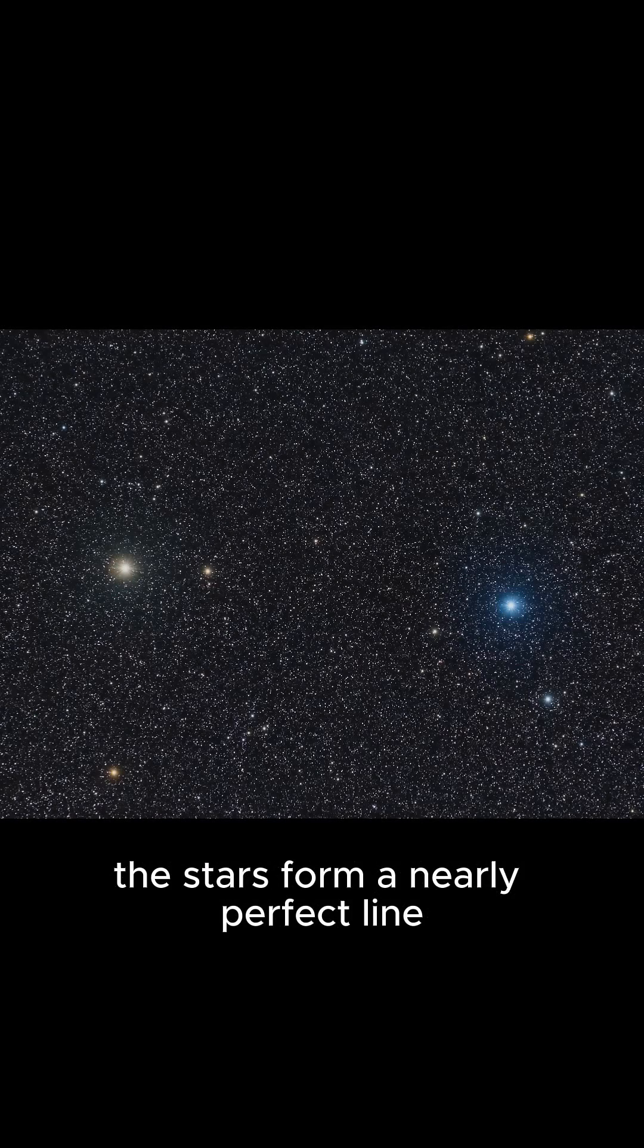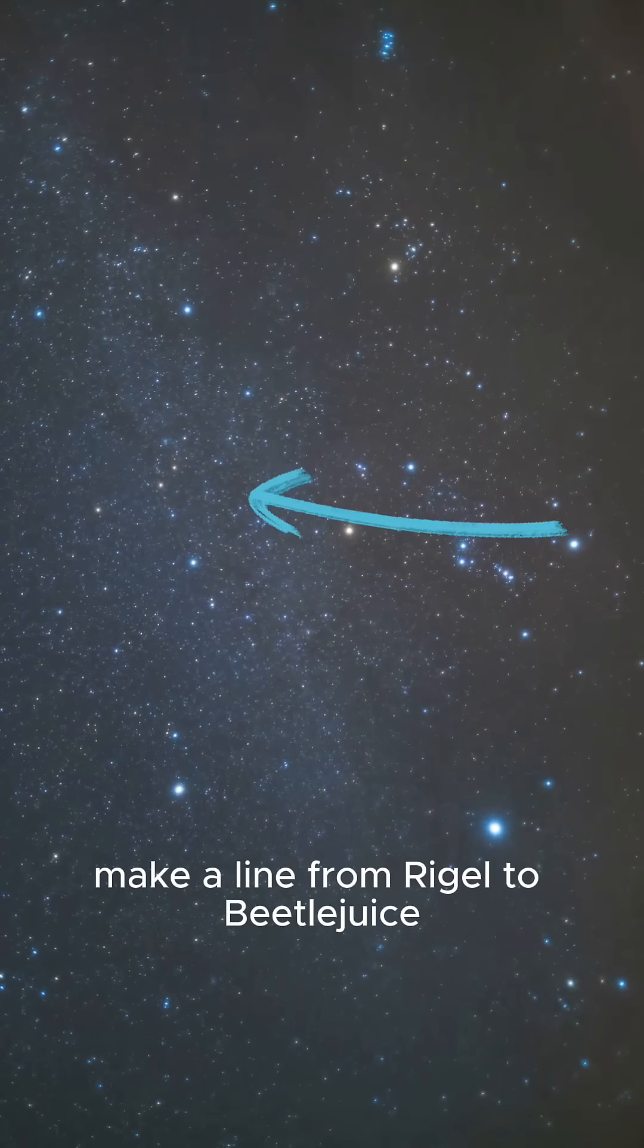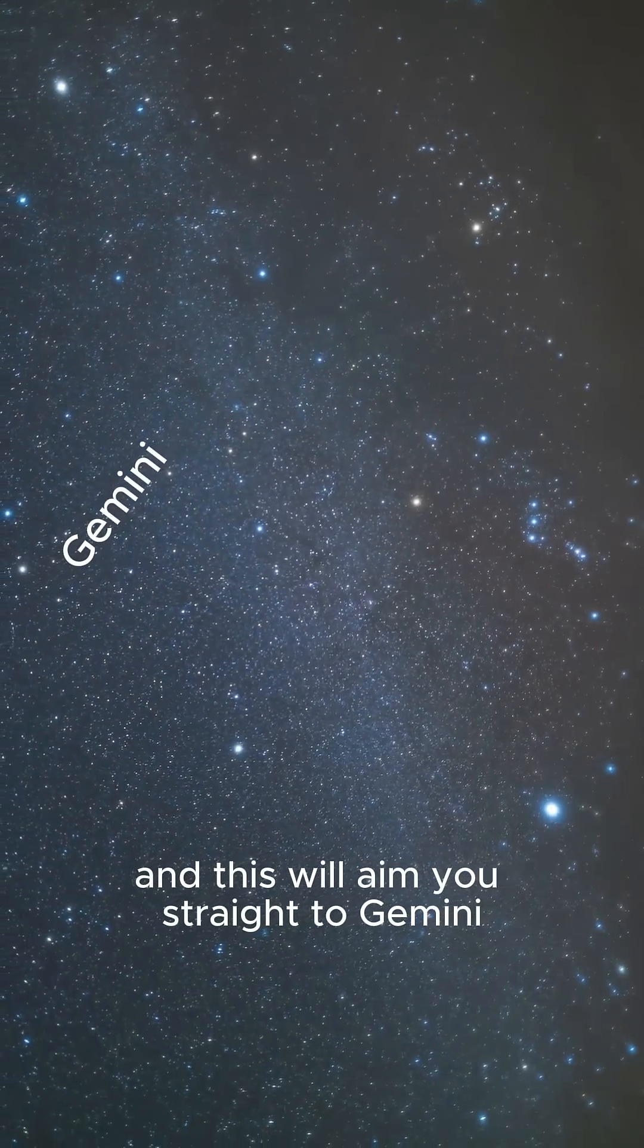The stars form a nearly perfect line, and it's easy to trace across the winter sky. The key is using Orion. Make a line from Rigel to Betelgeuse, the two brightest stars of Orion, and this will aim you straight to Gemini.